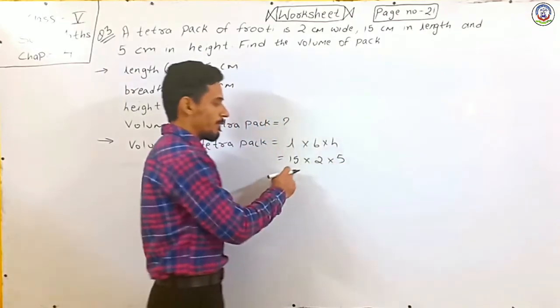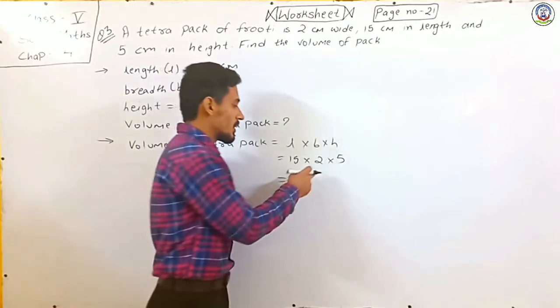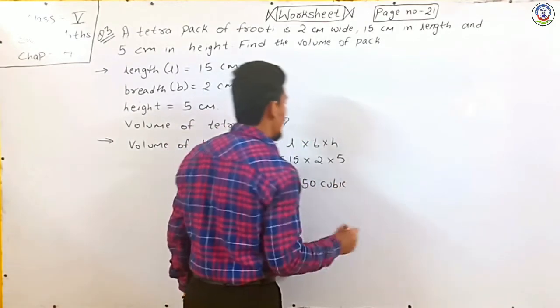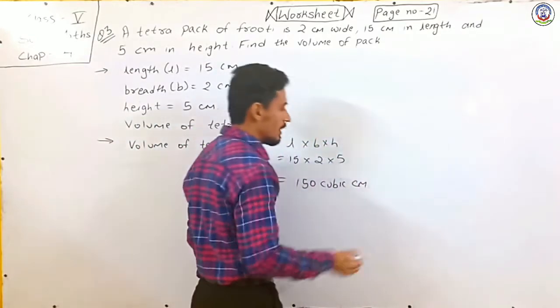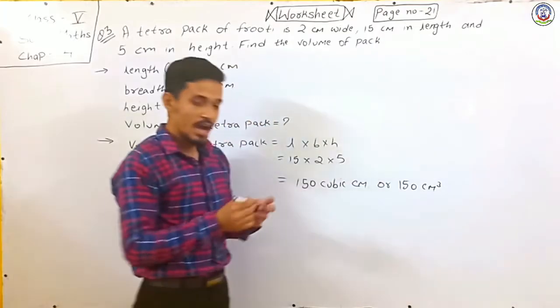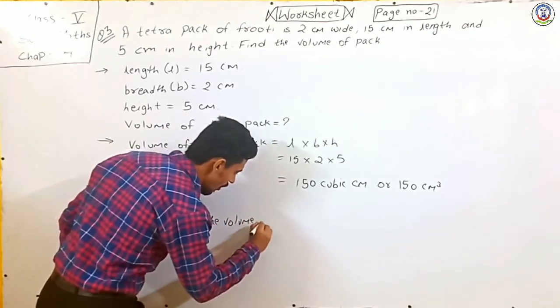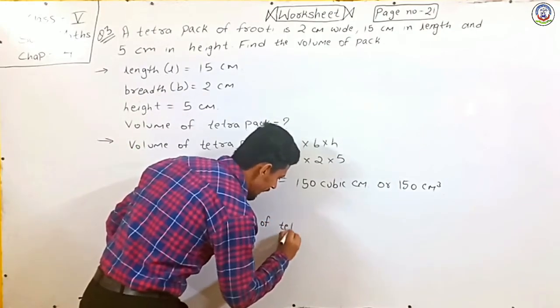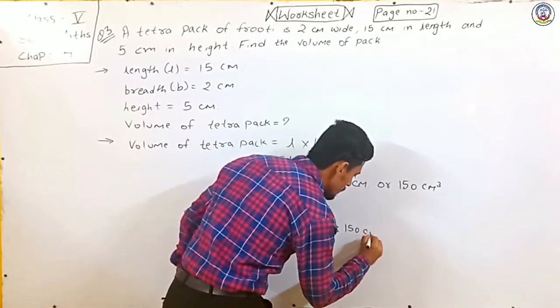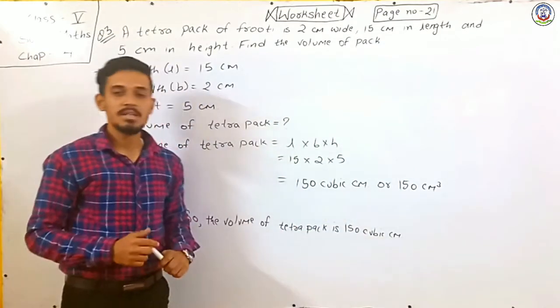Now we have to multiply 15, 2 and 5. So 15 multiplied by 2 is 30, 30 multiplied by 5 is 150. So we will write here 150 cubic centimeter. So the volume of tetrapack is 150 cubic centimeter.